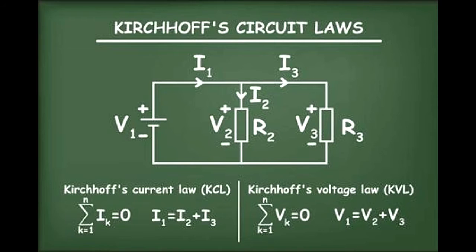Following are some examples of a reductionist approach. The claim that all sciences are reducible to physics is reductionist. Kirchhoff's circuit laws are reductionist in nature. Kirchhoff's current law (KCL) states that at any junction in an electrical circuit, the sum of the currents flowing into that junction node is equal to the sum of currents flowing out of that node. Kirchhoff's voltage law (KVL) states that the sum of the electromotive force in any closed loop of an electrical circuit is equivalent to the sum of the potential drops in that loop.